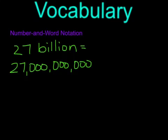Number and word notation, a notation consisting of the significant digits of a number and words for the place value. For example, 27 billion, right here, is number and word notation for this number right here, which is also pronounced 27 billion. In the standard notation, I had to write a bunch of zeros at the end of the number, but in the number and word form, I just had to write the 27 and then the word billion.